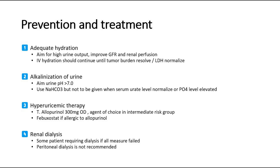Second, alkalinization of urine. Aim for urine pH more than 7.0. Use NaHCO3, but it should not be given when serum urate level normalizes or phosphate level is elevated.